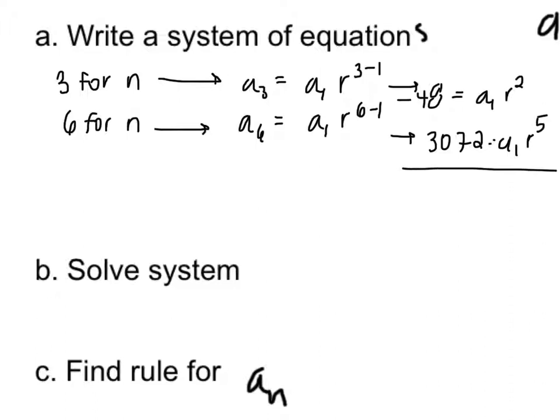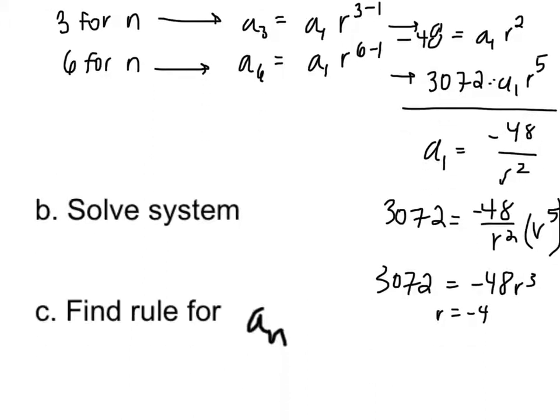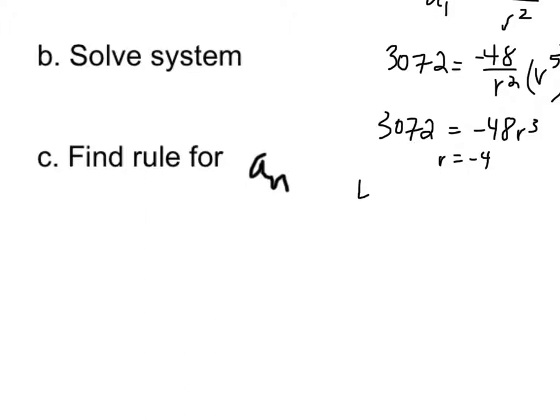Next, we're going to solve this system, and we get a sub 1 equals negative 48 over r squared. This simplifies further to 3,072 equals negative 48 over r squared times r to the 5th. Simplify this further. So r equals negative 4. Now that we know r, we can solve for a sub 1. So we plug in negative 4 as our r, and a sub 1 equals negative 3.